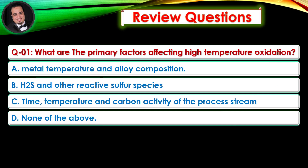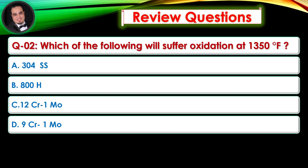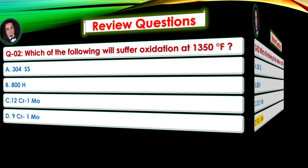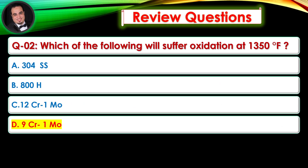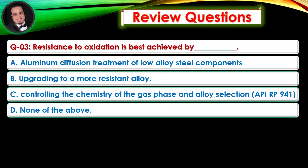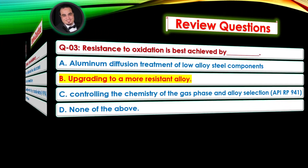Review questions. Question 1: What are the primary factors affecting high-temperature oxidation? Answer is A. Question 2: Which of the following will suffer oxidation at 1,350 degrees Fahrenheit? Answer is D. Question 3: Resistance to oxidation is best achieved by? Answer is B.